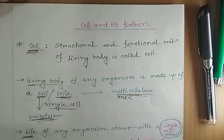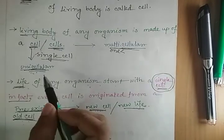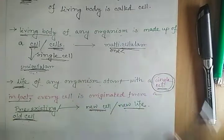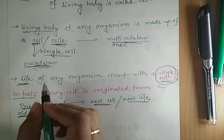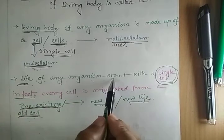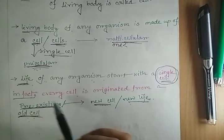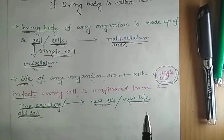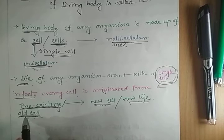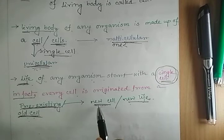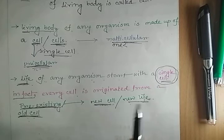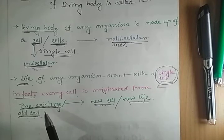An organism may be unicellular or multicellular, but the life of any organism starts with a single cell. In fact, every cell is originated from a pre-existing cell or old cell. So if we want a new cell or new life, we must have a pre-existing cell or old cell.